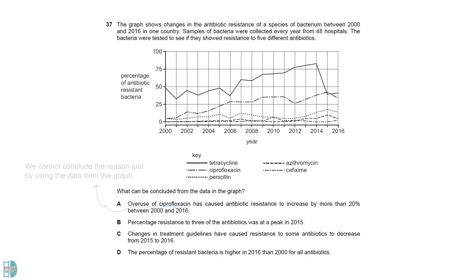A is incorrect as we cannot conclude the reason behind the increase of resistance from the graph. B is the correct answer as the peaks occurred in 2015. C is wrong because the graph does not show us the reason behind the decrease. D is not true for tetracycline.